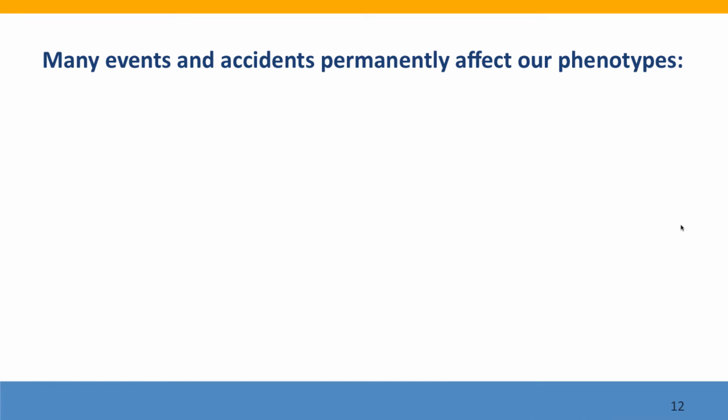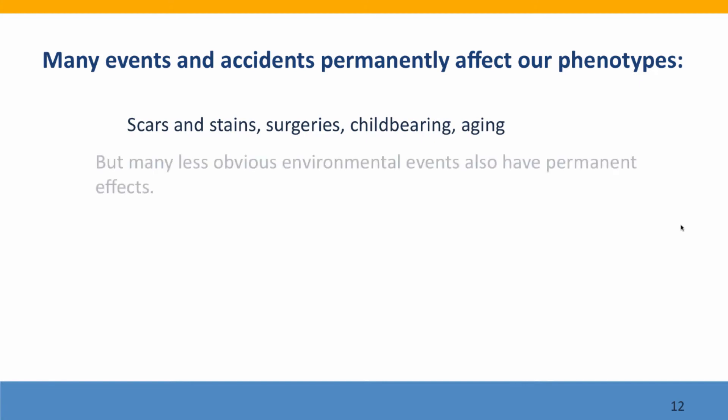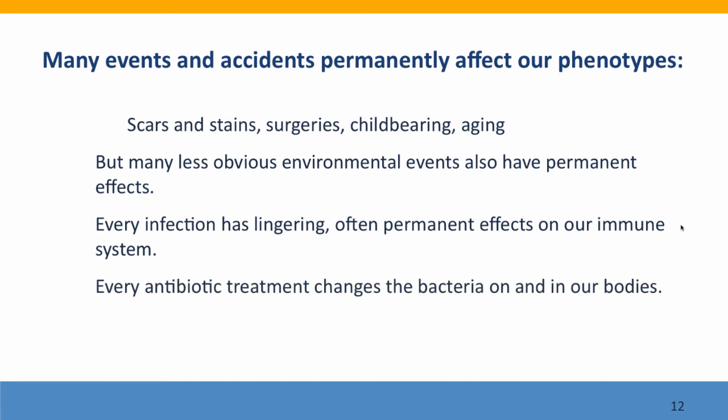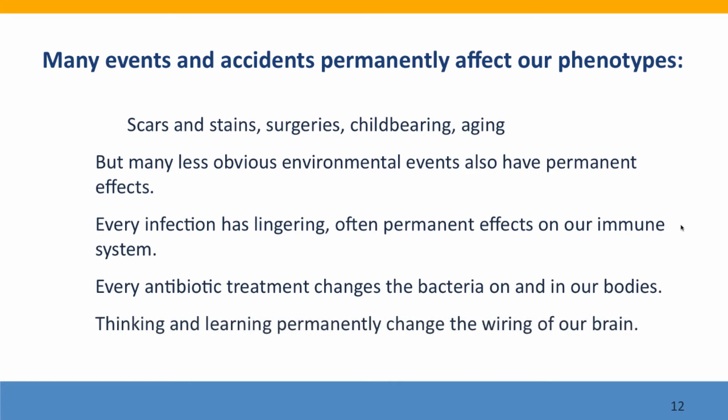It's easy to take for granted the effects of environment on our phenotypes and forget about it when thinking about genetics. But everything that happens to us affects our phenotype — scars, stains, surgeries, having children, getting old. Every infection affects our immune system permanently; that's how immunity and vaccines work. Every antibiotic treatment changes the bacteria on and inside our bodies in ways that can be permanent. And even thinking and learning — taking this course — permanently changes the wiring of your brain. I think that's really cool.